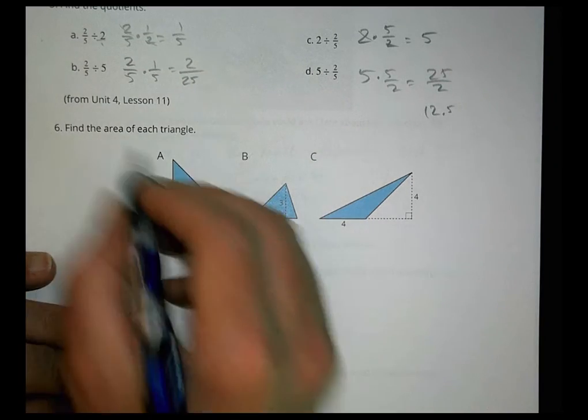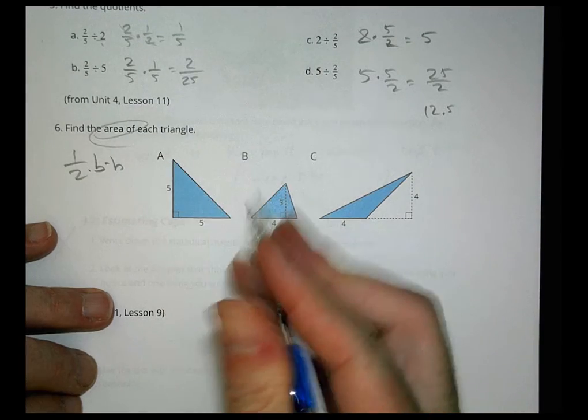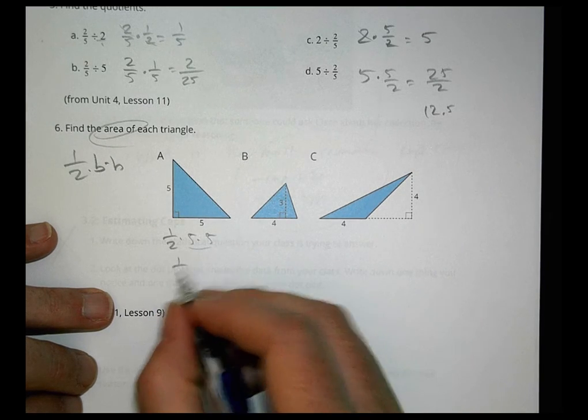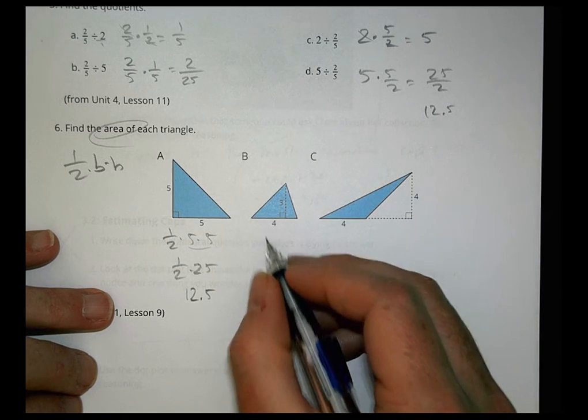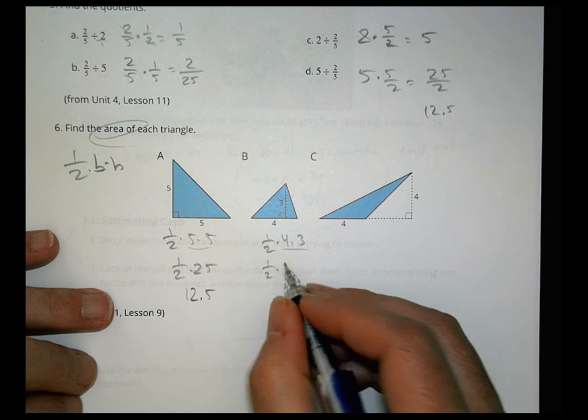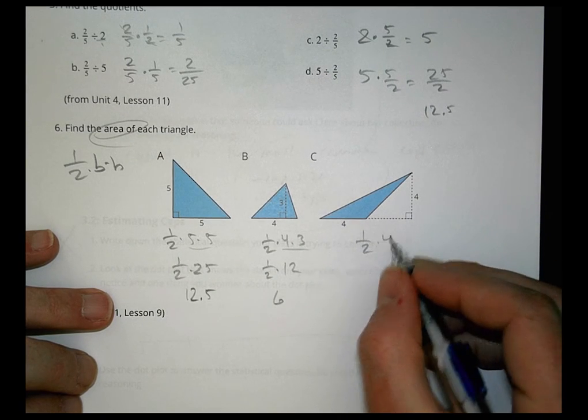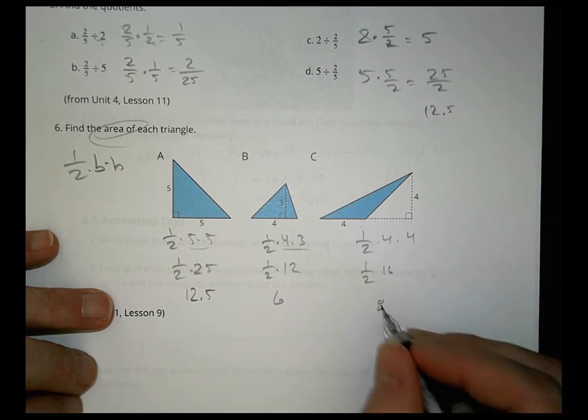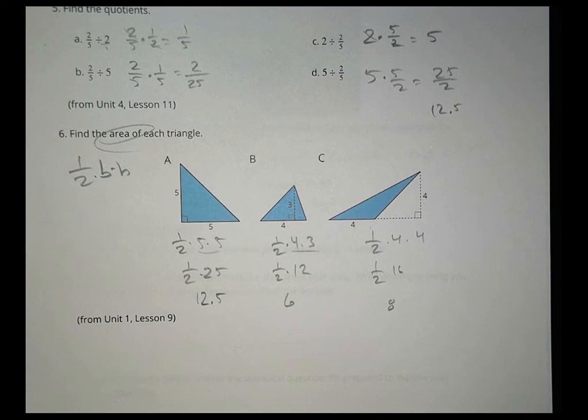Number six, our last one, area of the triangle. Area is one half of the base times the height. So we have one half of 5 times 5. 5 times 5 is 25. So half of 25, which is 12.5. Here we have one half of the base times the height. That's one half of 12, which is 6. And you have one half of the base, which is 4 times the height, which is 4. So one half of 16, which is 8. And that is it for today. Have a great day and we will see you next time.